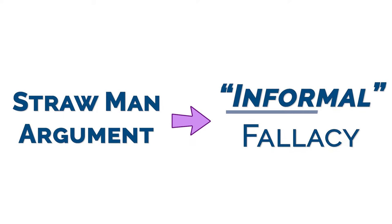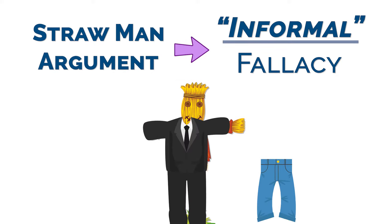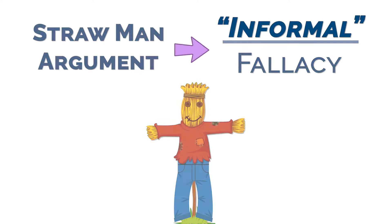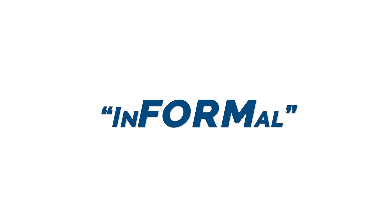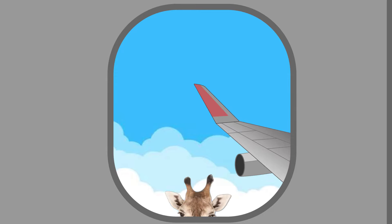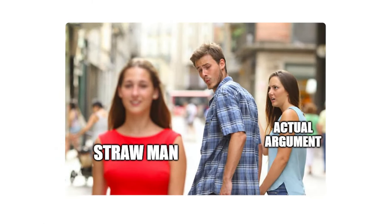A strawman argument is therefore described as an informal fallacy. Not because a strawman would wear jeans instead of a suit — even though he probably would — but because it isn't the form that's fallacious. The fallacy comes from the context: the fact that the strawman isn't dealing with the actual argument.